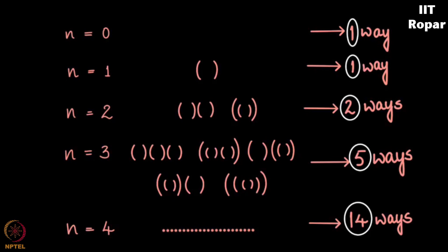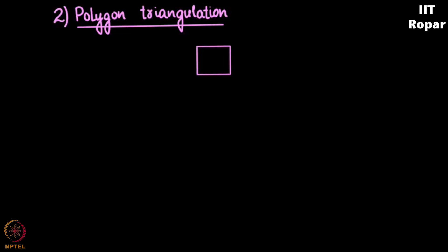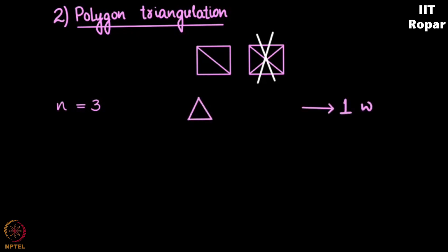The next example is polygon triangulation. By triangulation we mean constructing triangles inside the polygon in a particular way. We want to construct triangles without two lines crossing over each other. Starting from n equal to 3, we get a triangle itself — there is just one way of getting a triangle.